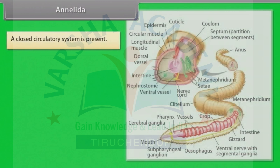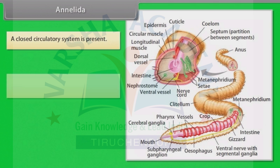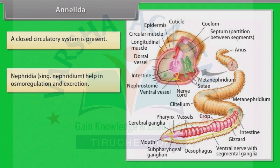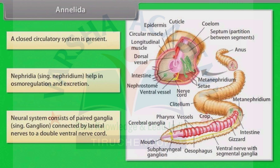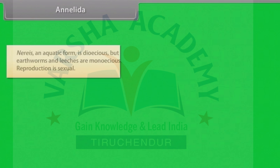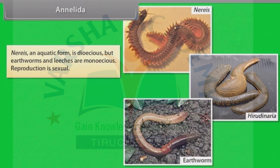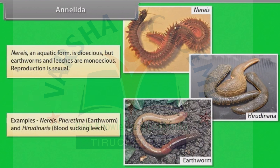They possess longitudinal and circular muscles which help in locomotion. A closed circulatory system is present. Nephridia — the singular being nephridium — help in osmoregulation and excretion. The neural system consists of paired ganglia connected by bilateral nerves to a double ventral nerve cord. Aquatic forms are dioecious, but earthworms and leeches are monoecious. Reproduction is sexual. Examples: Pheretima, that is earthworm, and Hirudinaria, that is blood-sucking leech.